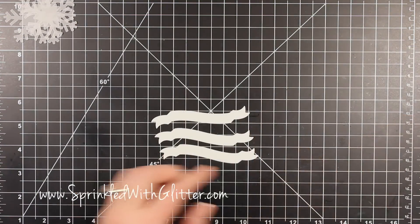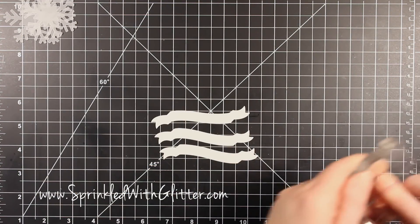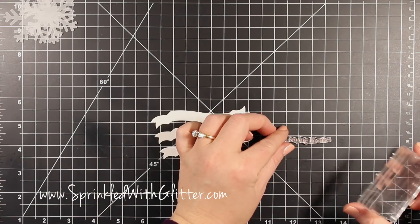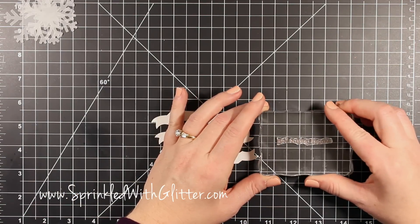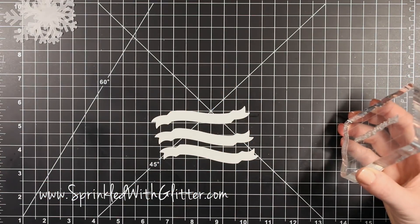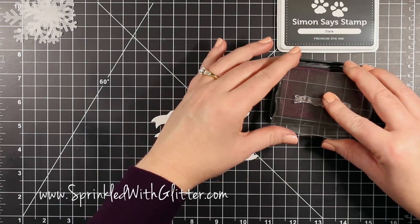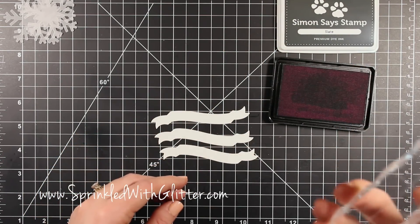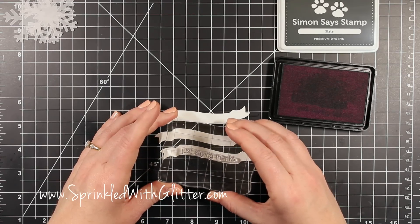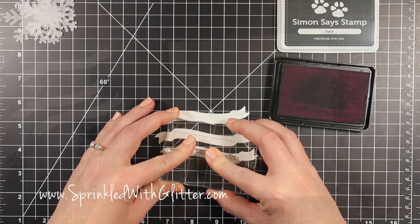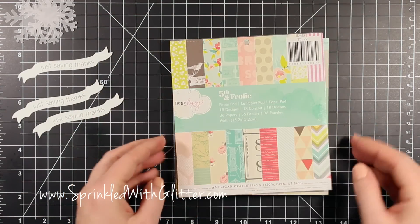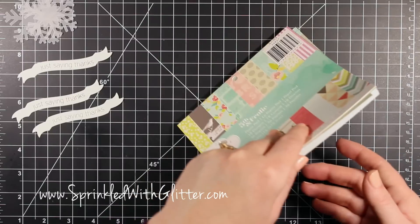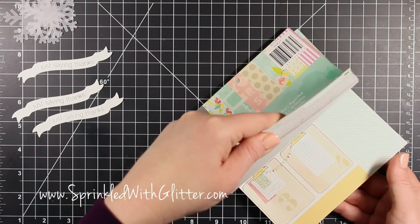I'm just cutting these banners out of some Neenah Solar White cardstock and I've cut three out because I'm making three cards. Now I will take my Just Saying Thanks sentiment and mount it onto my stamp block. I laid it on my work surface there and picked it up with the block so that I made sure that it kept its natural tilt so that it would fit perfectly on these banners, and then I stamped all three of my banners with some Slate ink from Simon Says Stamp.